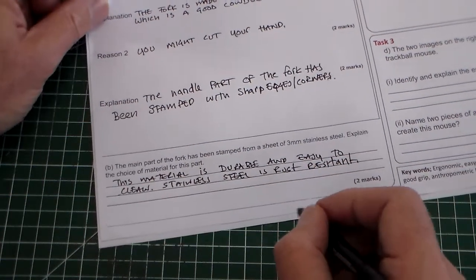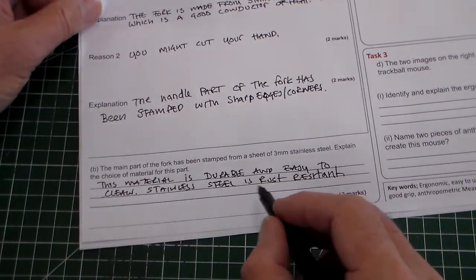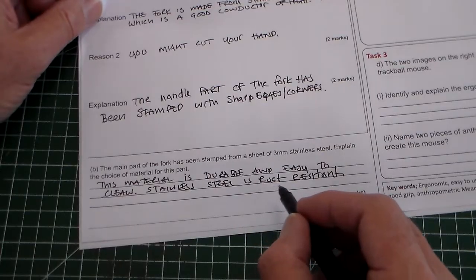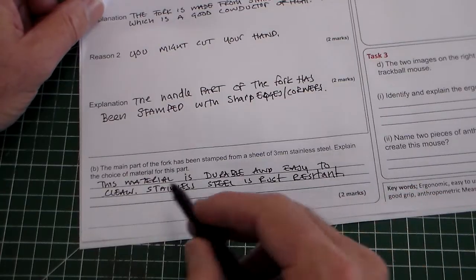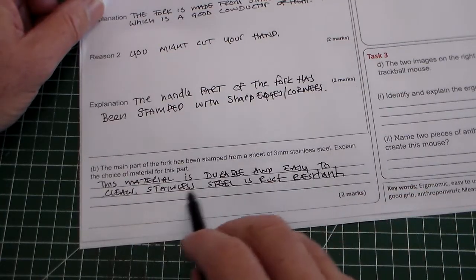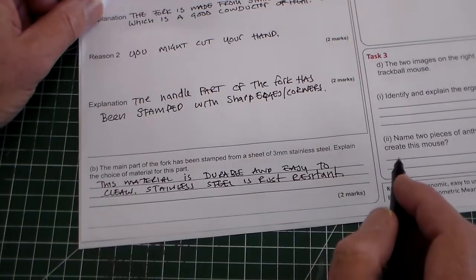We say rust resistant rather than rust proof because stainless steel eventually can rust, but it's rust resistant. So there we go, we'd get our two marks because we've got one mark from durable and easy to clean, one mark from stainless steel is rust resistant.